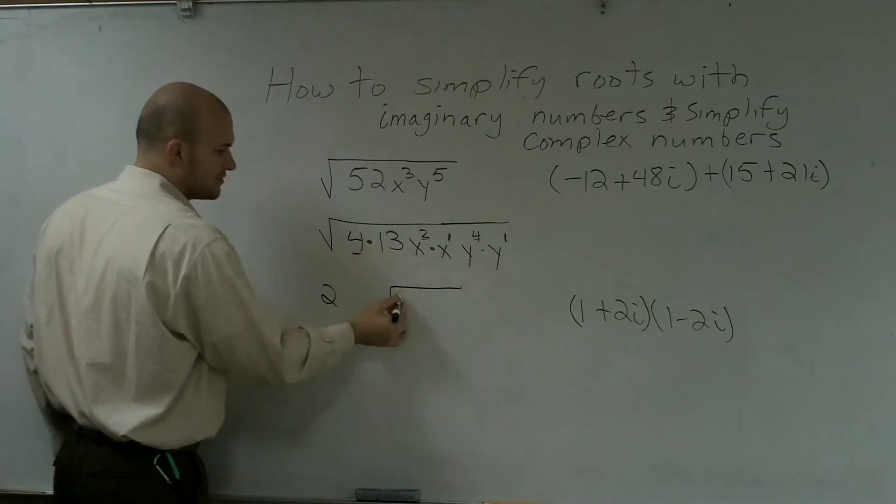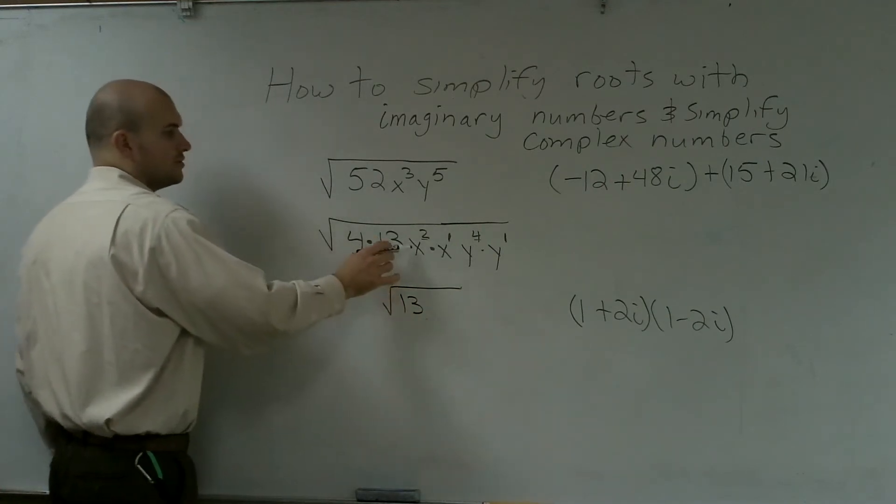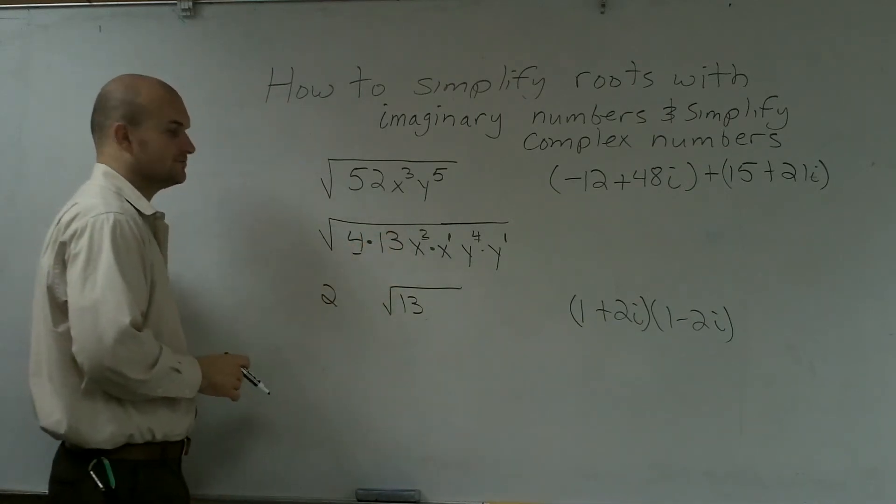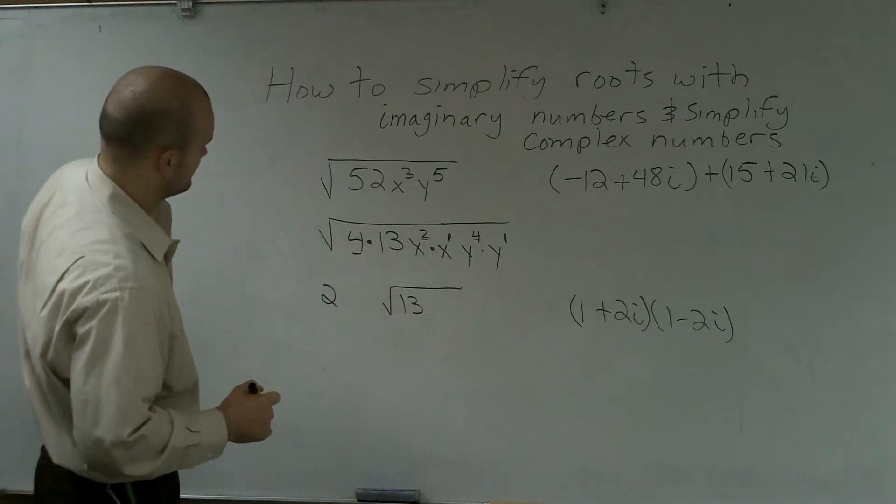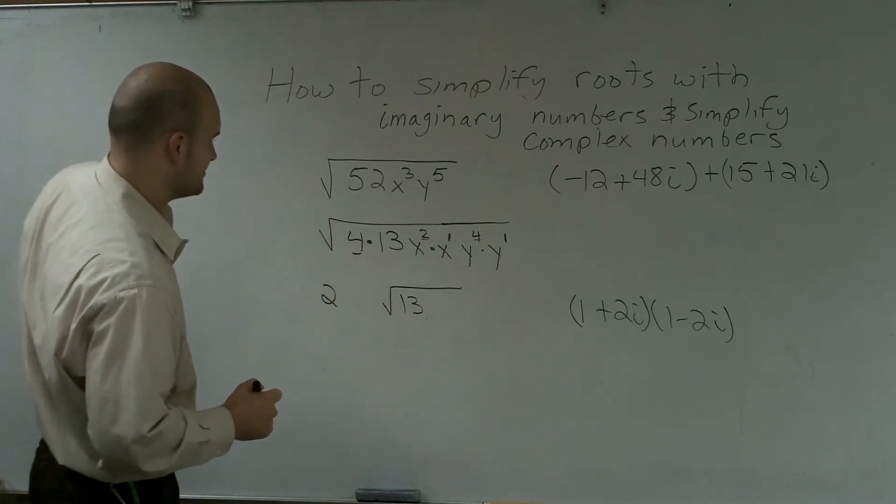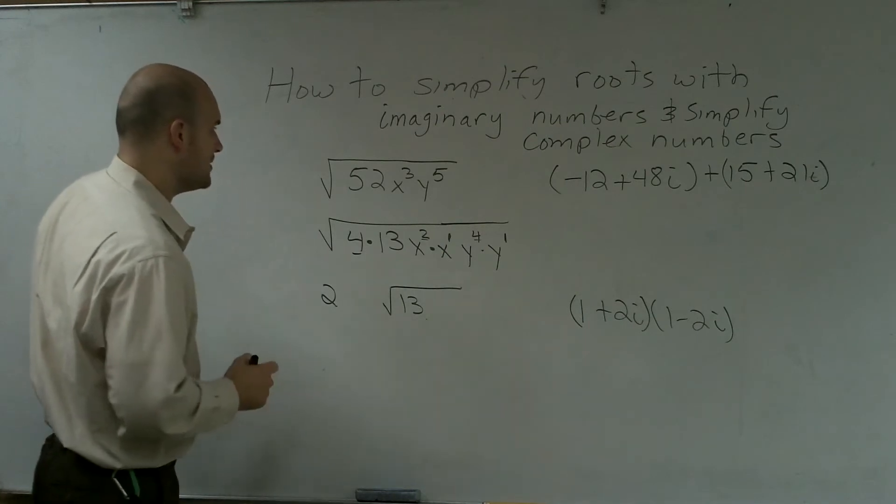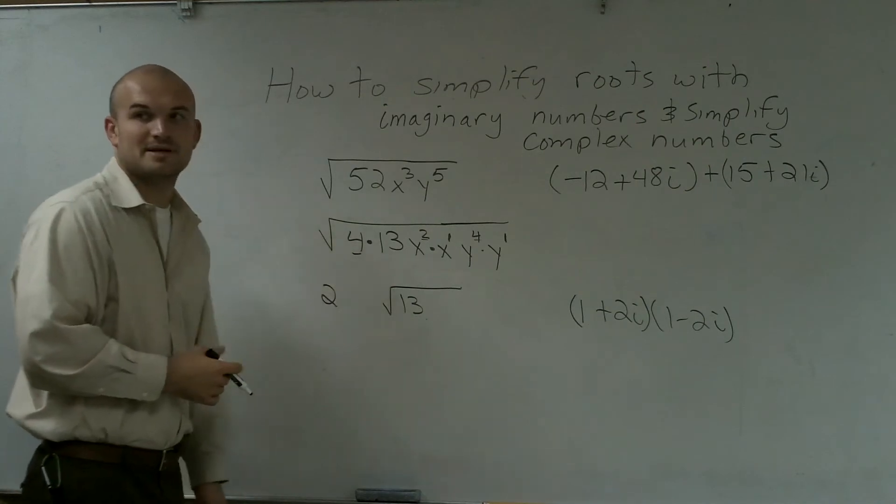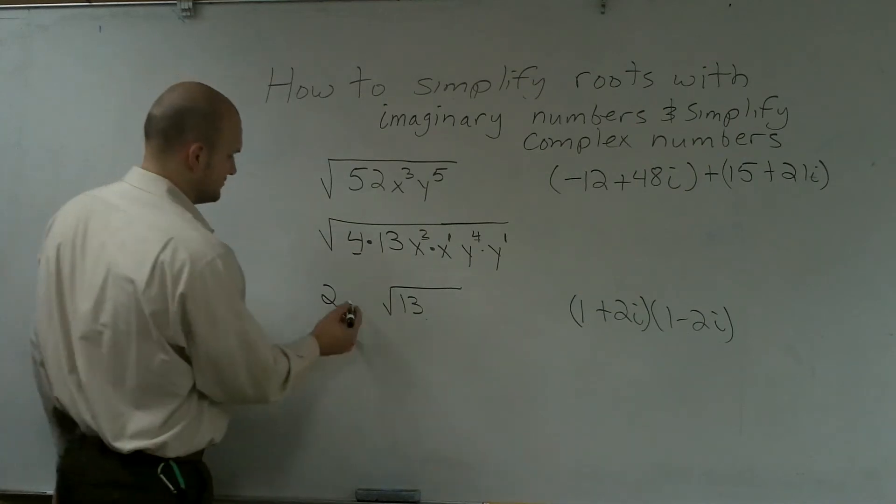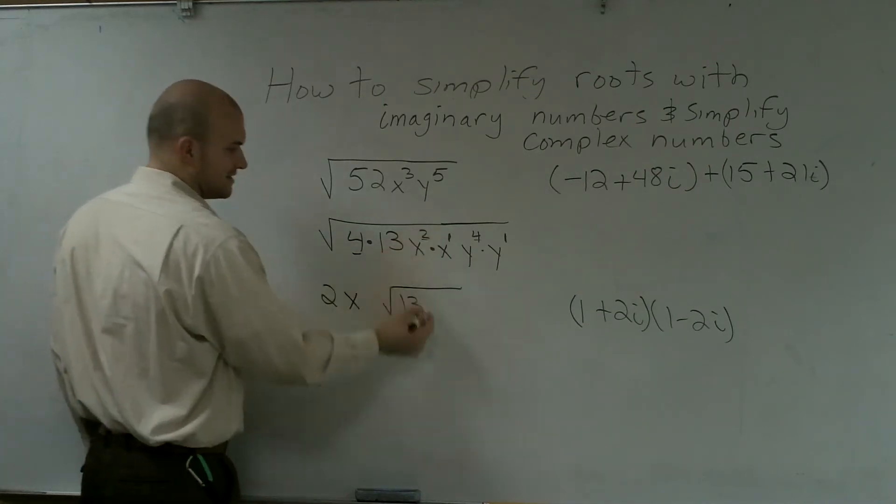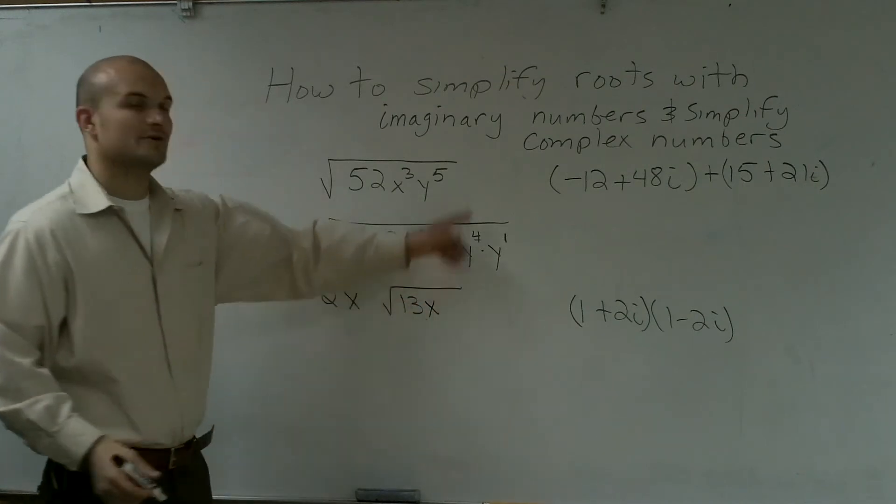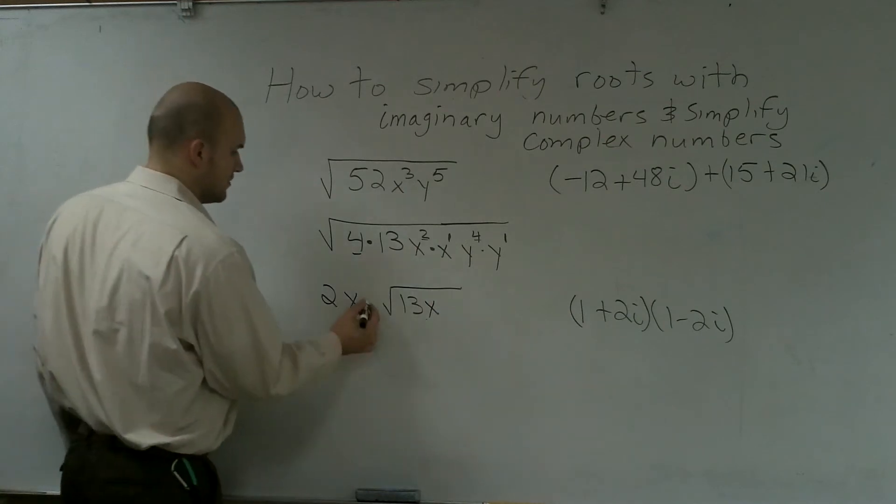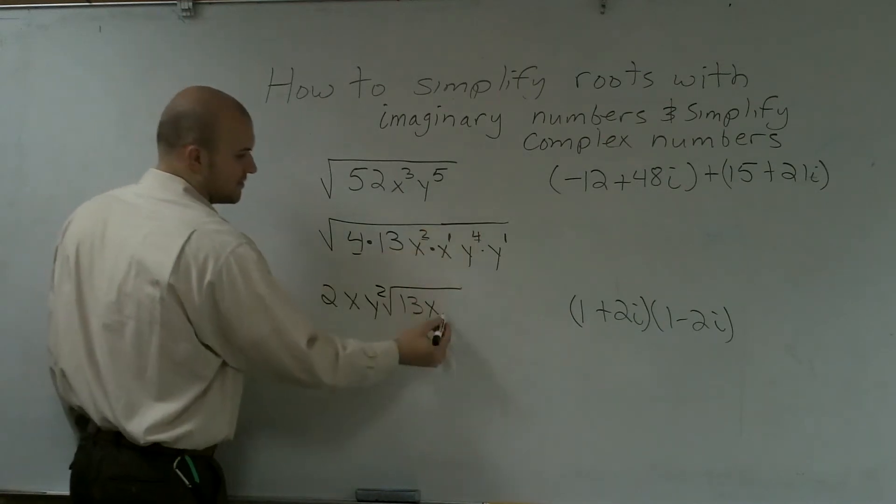I can factor out the square root of 2. I can't go ahead and take that out. So the square root of x squared is going to become x. I can't take the square root of x to the first. The square root of y to the fourth, so the square root of 4 is going to become y squared. And I can't take the square root of it.